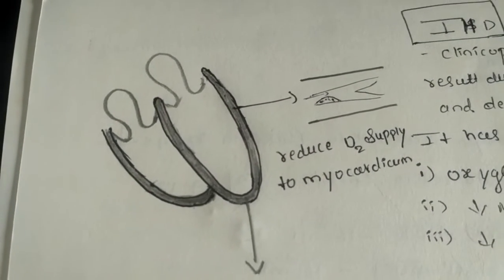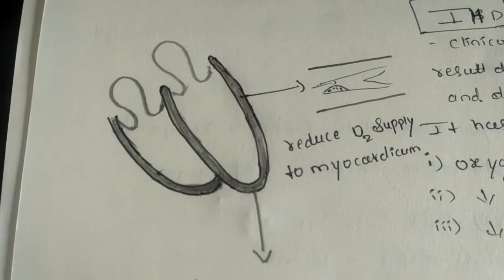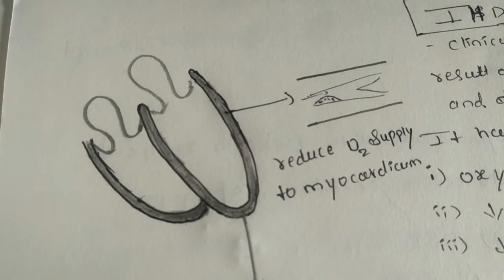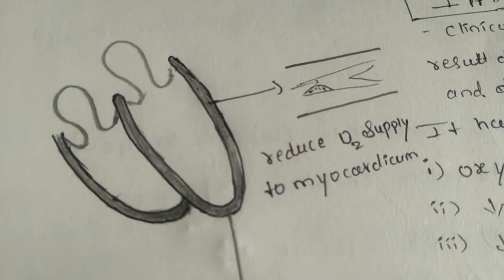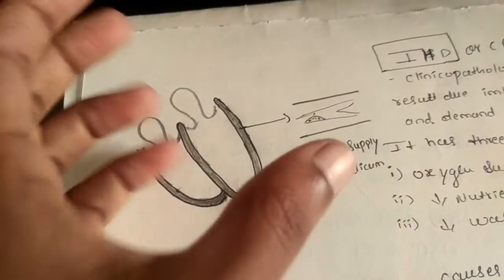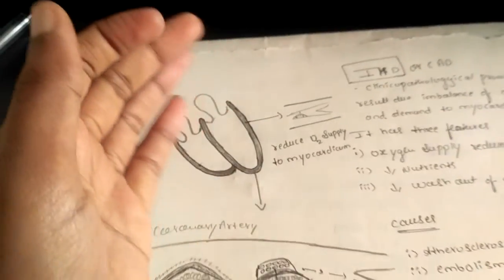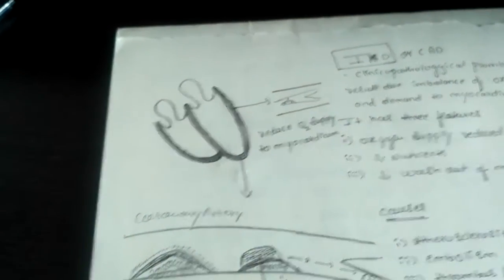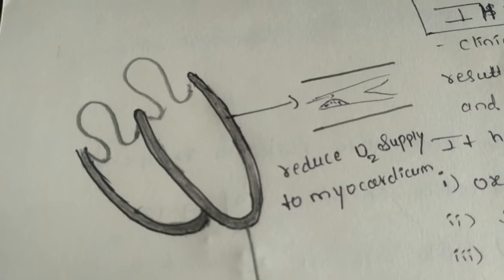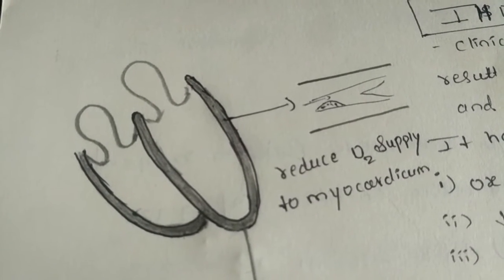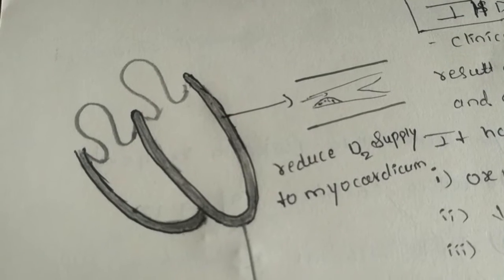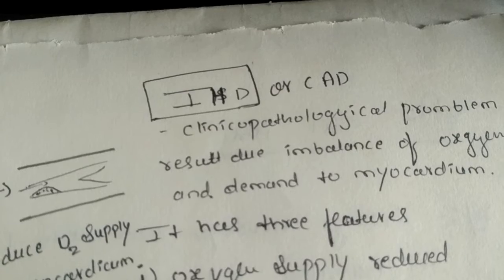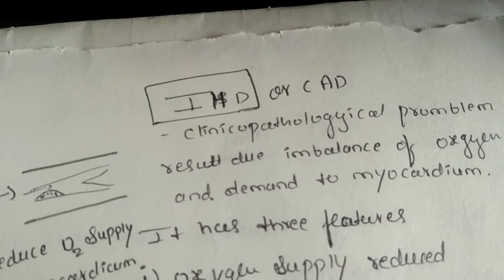If myocardium oxygen supply is reduced, then the capacity to contract, the capacity of this myocardium to contract the blood decreases. As the capacity of myocardium to contract the blood decreases, it will lead to ischemic heart disease or coronary artery disease.